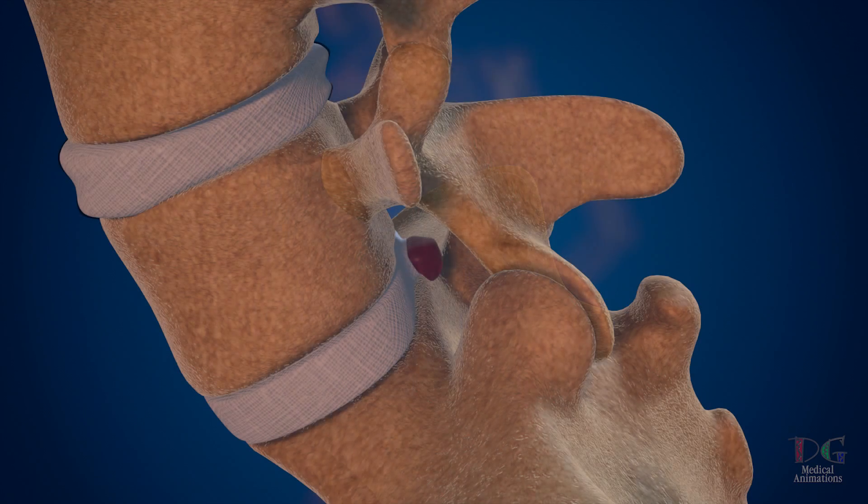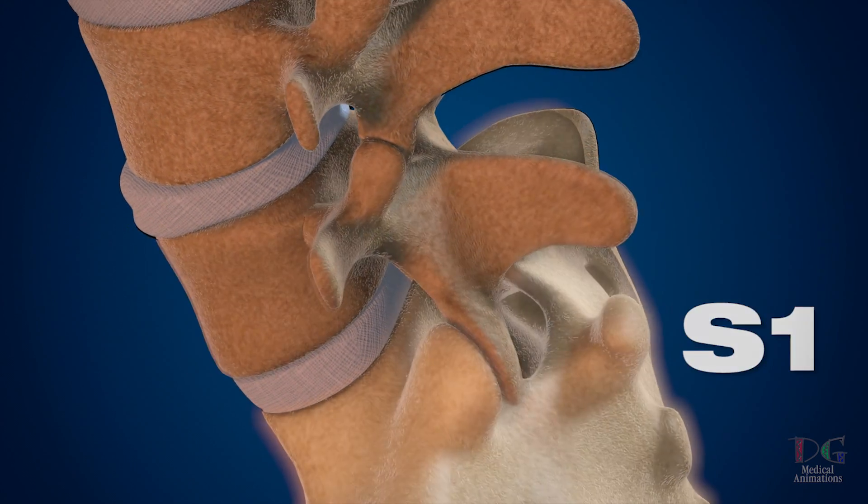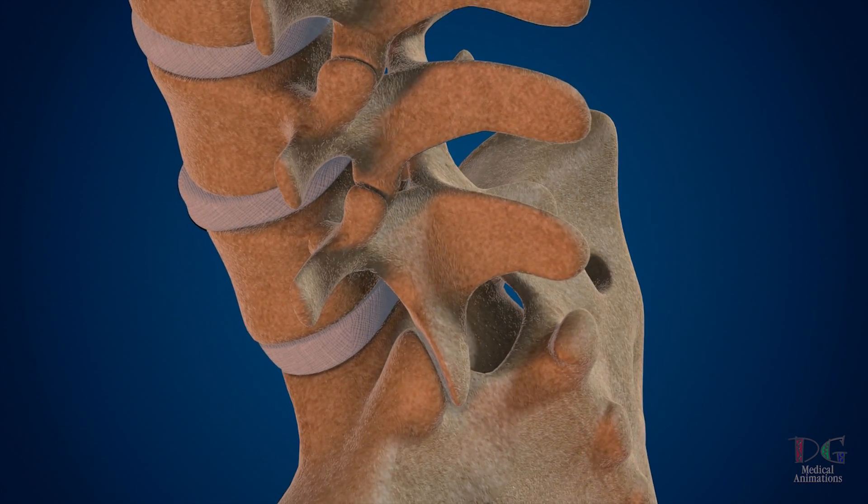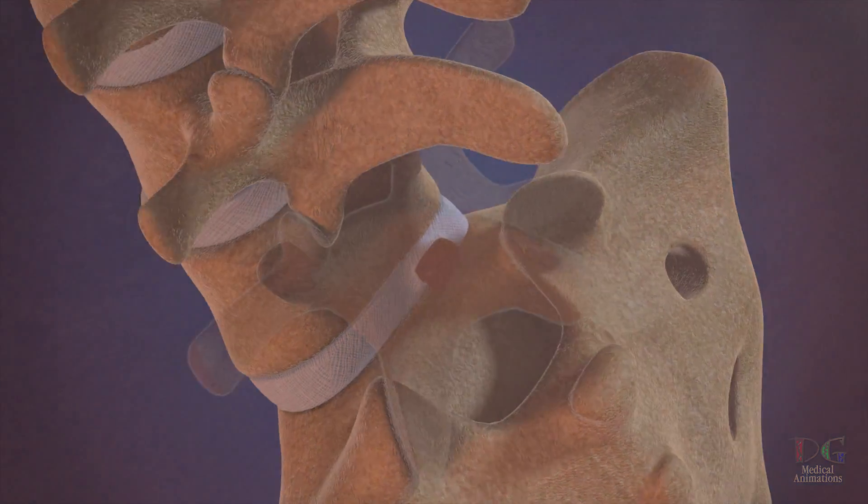This is an example of a protruded disc at the L5-S1 level of the spine. In a microdiscectomy, the surgery is done laparoscopically through a small incision.